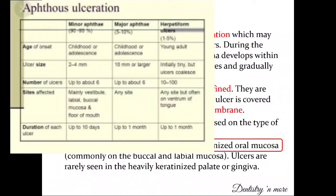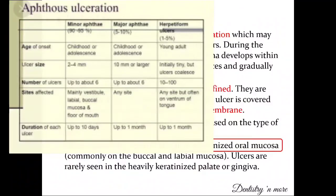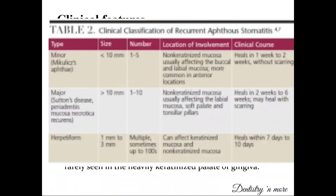The name 'herpetiform' is used because the presentation is similar to herpes simplex virus ulcers, but the cause is not related to any viral infection — there will be no prodromal symptoms in herpetiform ulcers. They present as crops of tiny pinhead ulcers which coalesce together, occurring in both keratinized and non-keratinized mucosa. These ulcers are more painful, can heal within 10 days, and can immediately recur.